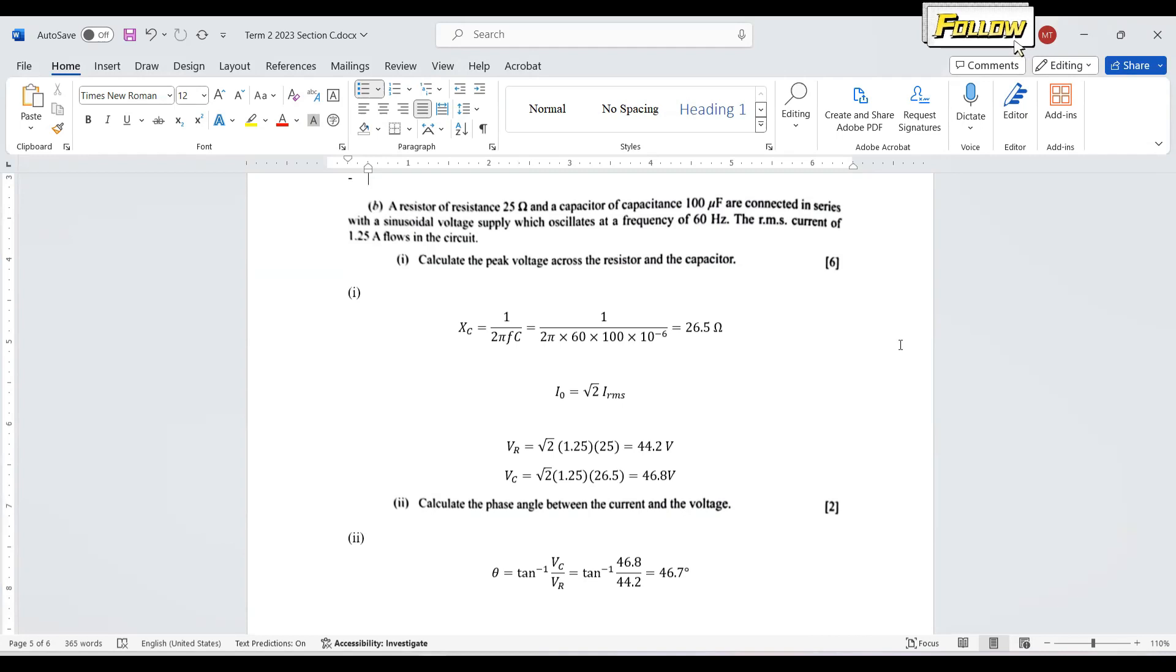Six marks. I think many people would love this question. We have the reactance, 1 over 2 pi Fc, so we can calculate it equals 26.5 ohm. And we need to get the peak voltage. Please convert the RMS current to peak current, which is multiplied by sqrt2.